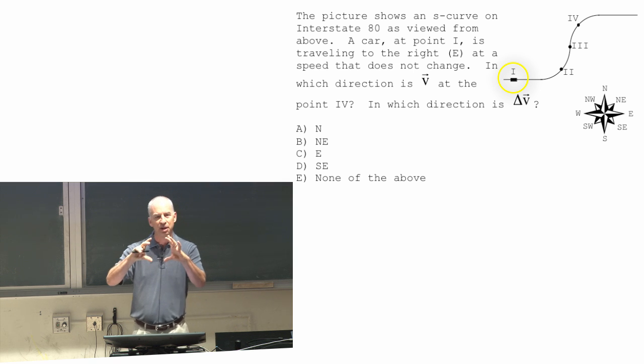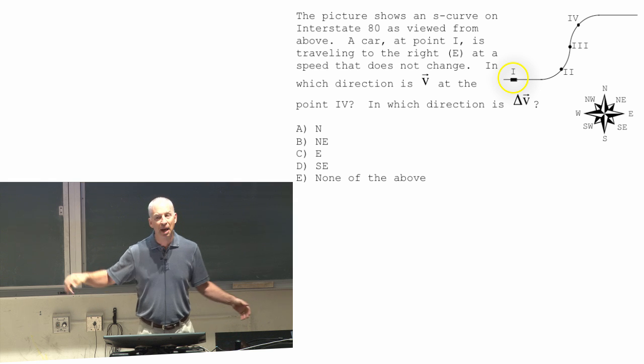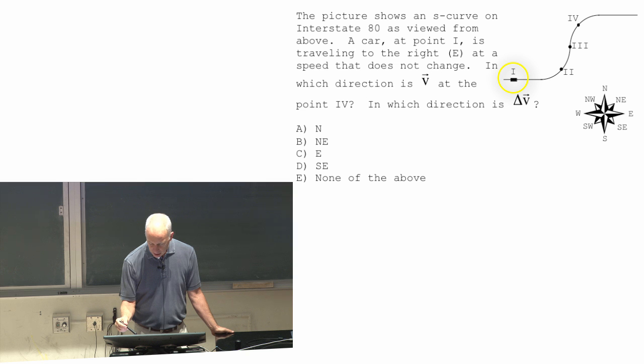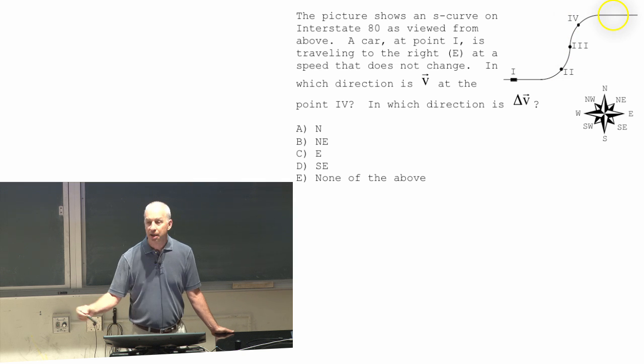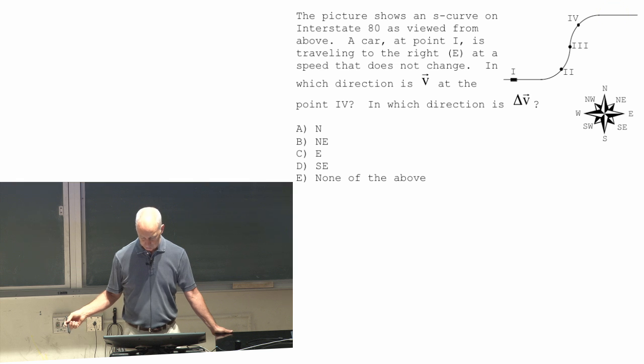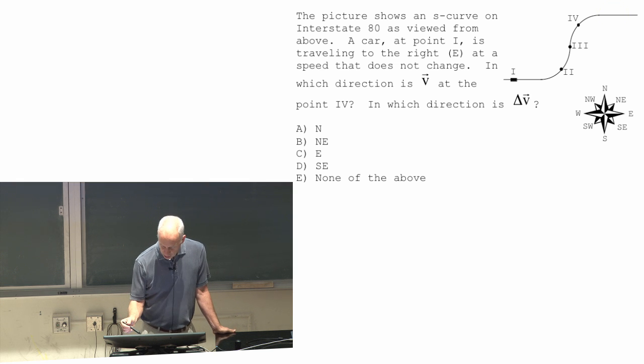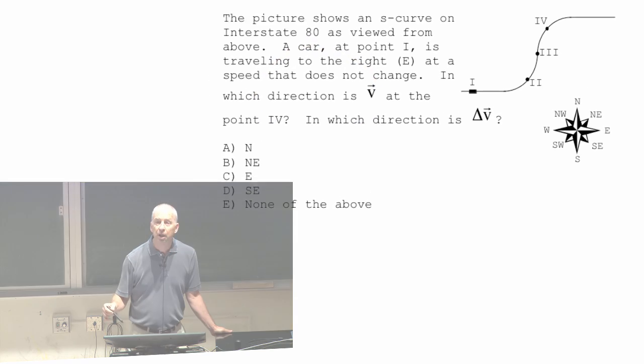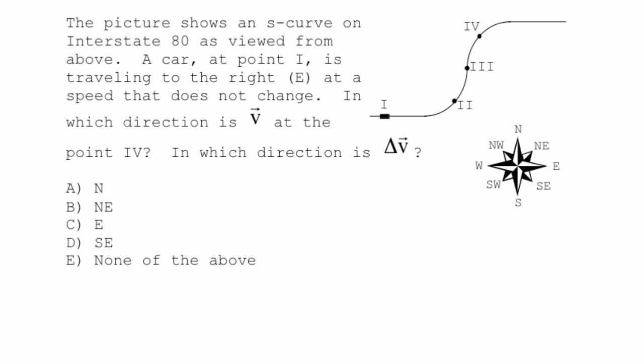So the magnitude of the velocity vectors are going to be the same all the time. Car is moving east. Eventually it goes around this curve. It goes through point two. It goes through point three, point four. And then later on, it's headed east again. The question for you right this second is this first one. In which direction is the velocity vector pointing when the car is at point four? So when the car is at point four, what's the direction the velocity vector is pointing?